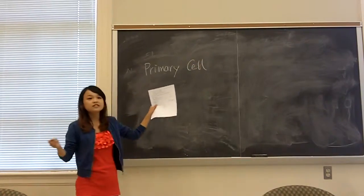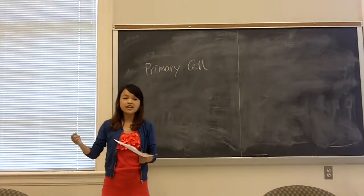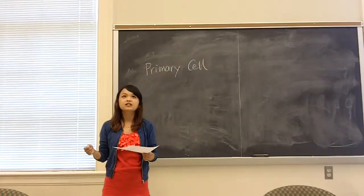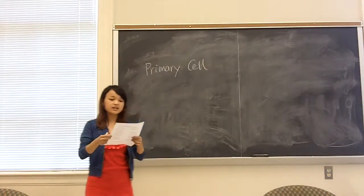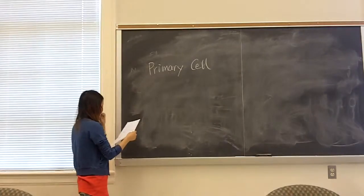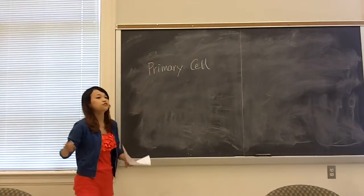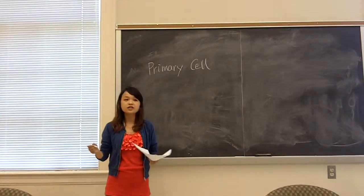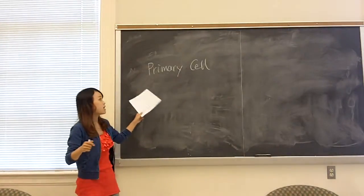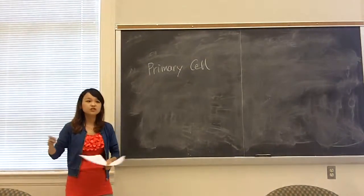Primary cell is a kind of battery that can convert chemical energy into electrical energy. And if we want to get the electricity, we should make the electron move. So in the primary cell, we would choose redox reaction.